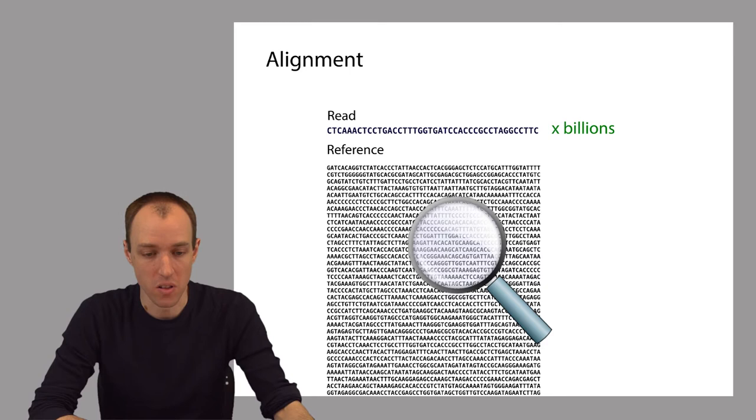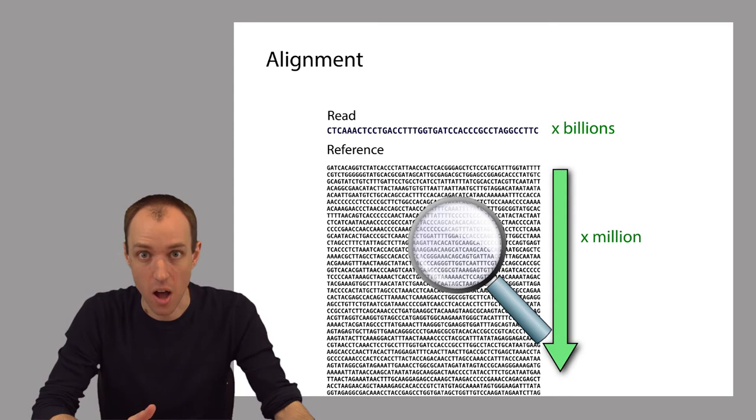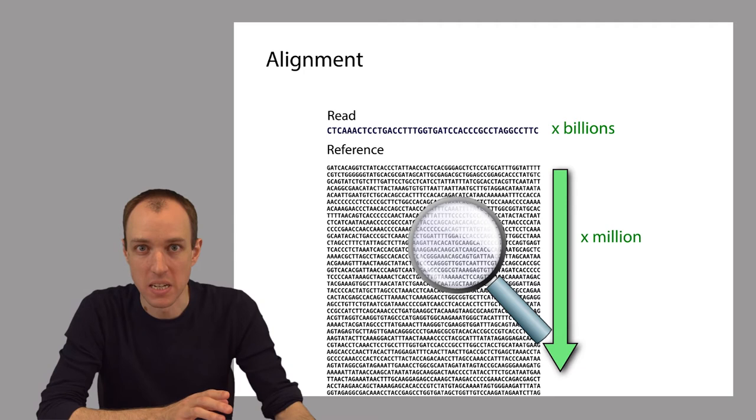Furthermore, this reference sequence could be very long. For example, the human reference genome is about three billion bases long. Three billion. In this figure on this slide, I can only fit in about 2,000 or so characters. So you have to imagine that the human genome is more than a million times longer than what I'm showing you here.